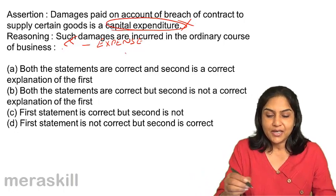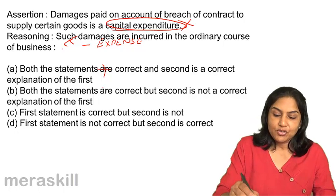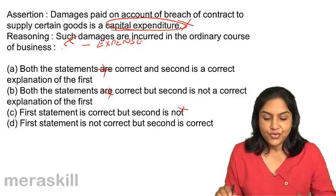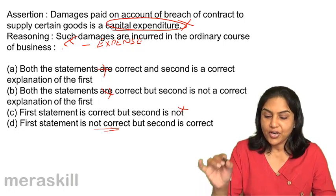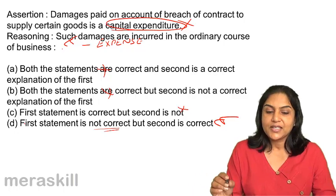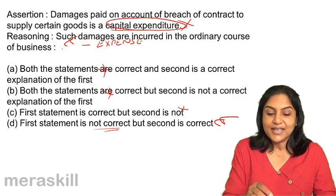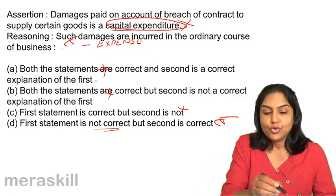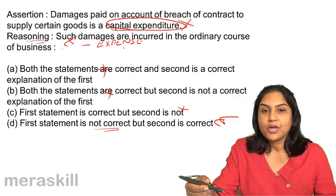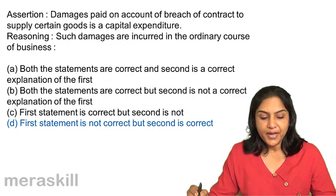Both statements are correct — no, that is not true. Both statements are correct but the second is not a correct explanation — also not true. First statement is correct — no, it is not correct. Therefore our option should be D. First statement is not correct — yes, that is true. But the second is correct — yes. So our correct answer is D. Please understand: you have a statement and a reasoning, and the explanation is the opposite of the assertion.